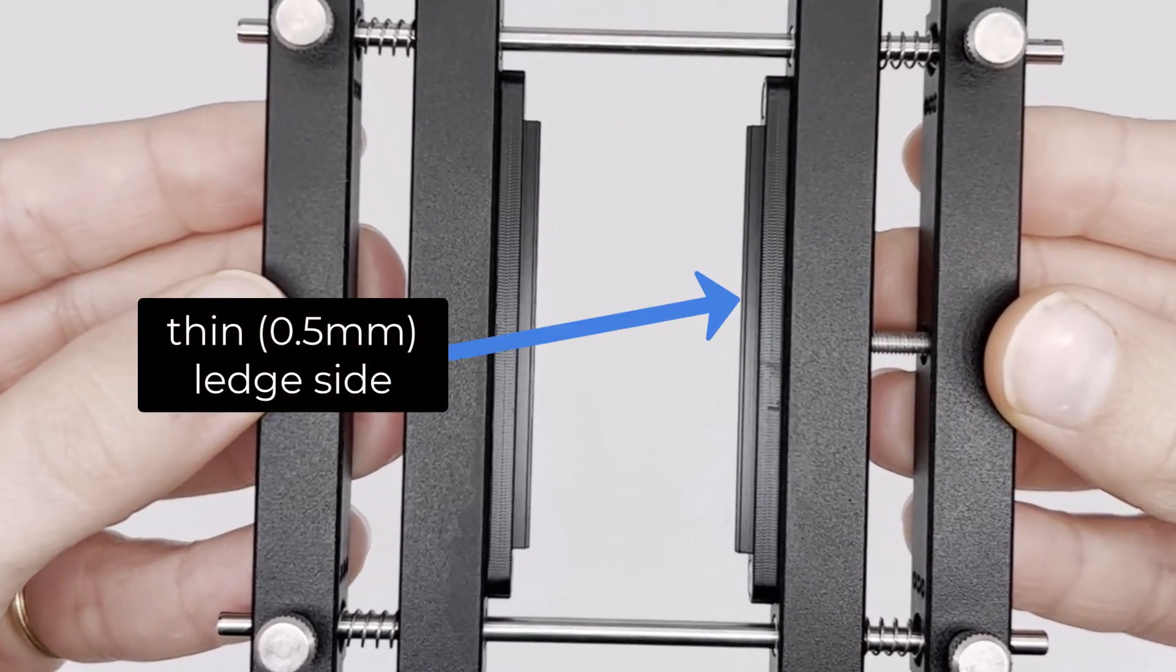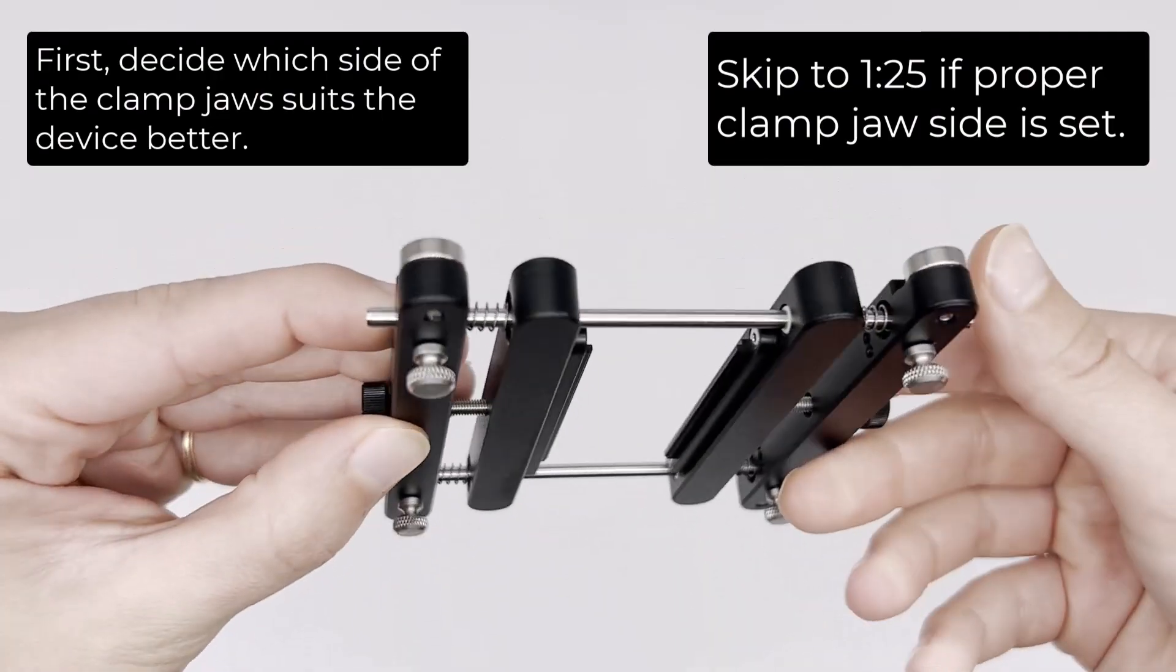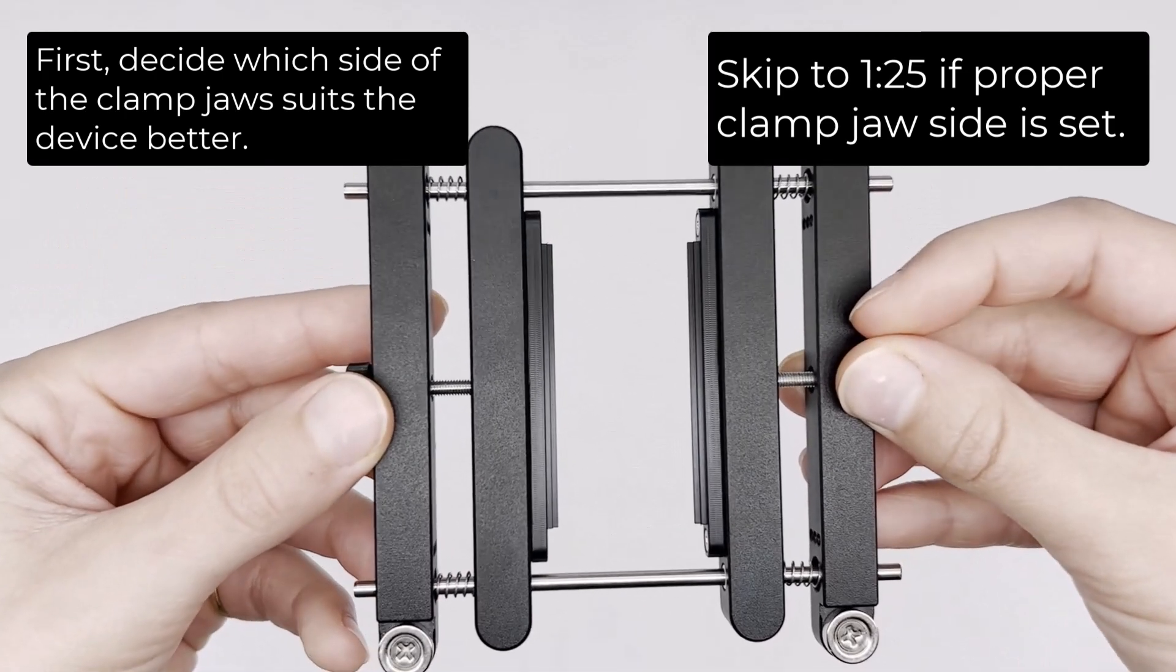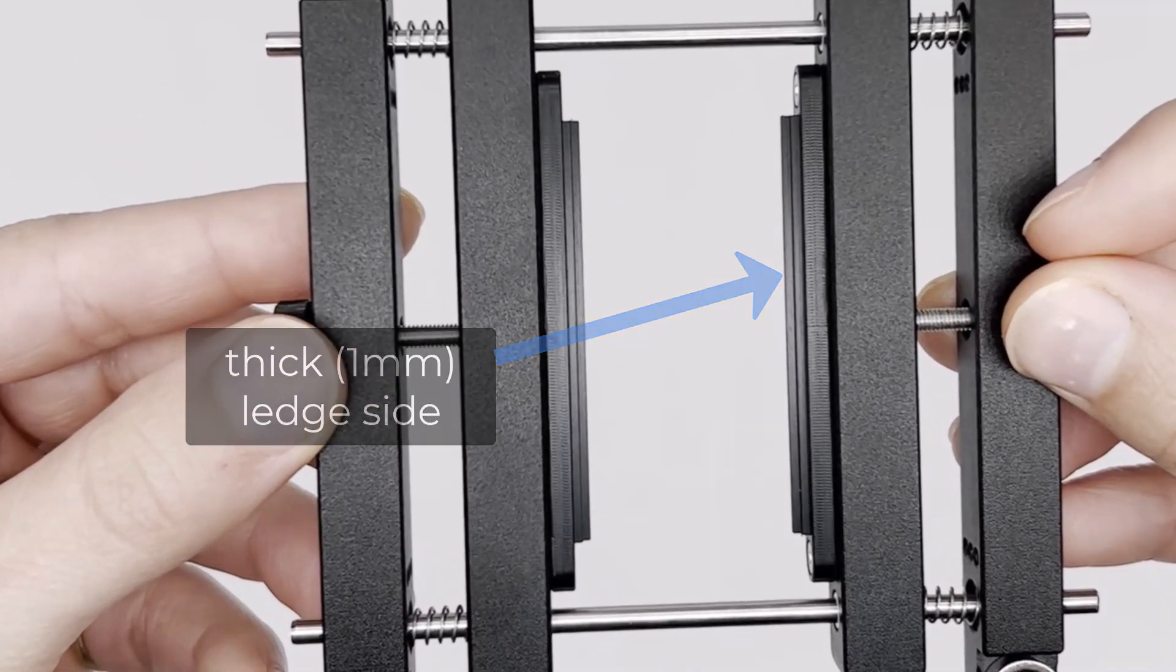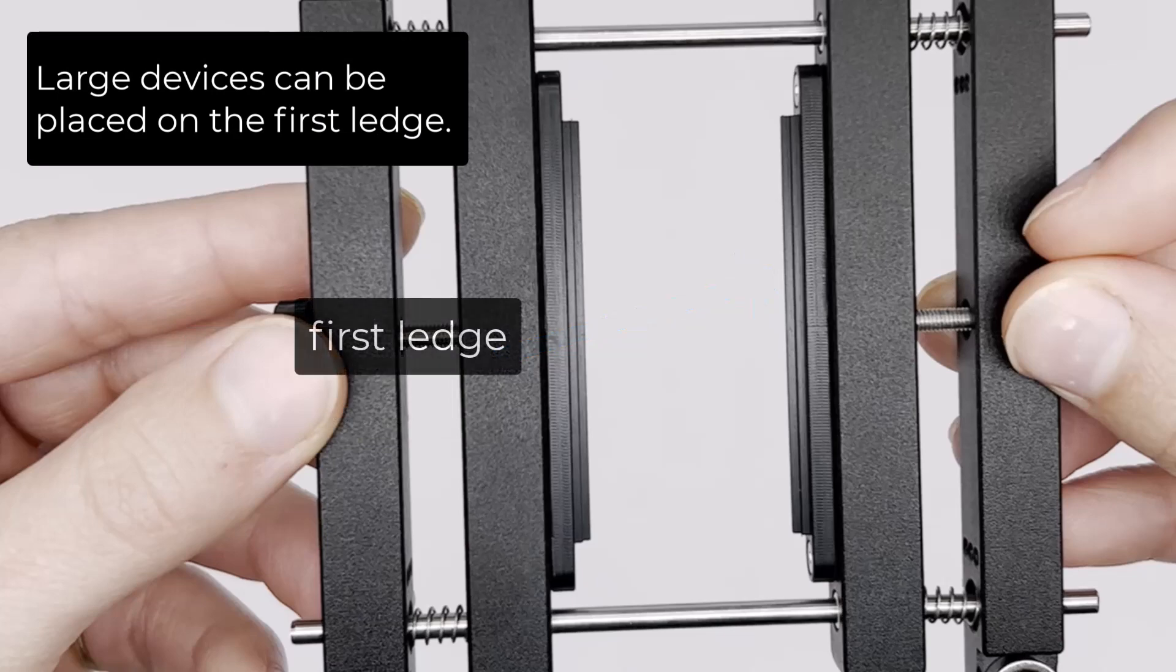The thin side has half millimeter ledges. The thick side has one millimeter ledges. Large devices can be placed on the first ledge.